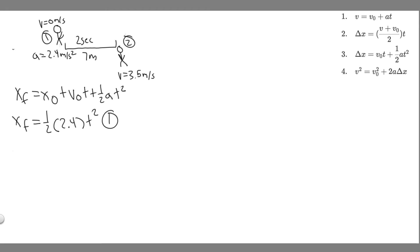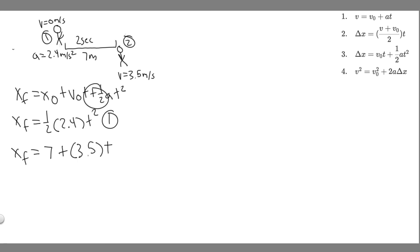For person 2, x final equals his initial position plus v sub 0 times t plus one half at squared. His initial position is 7 meters ahead, so x initial is 7. His initial velocity is 3.5 meters per second, and we know it's constant throughout, so acceleration is 0 and that term drops out. His final position function is just 7 plus 3.5t.